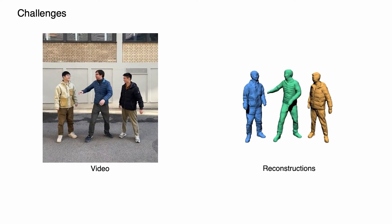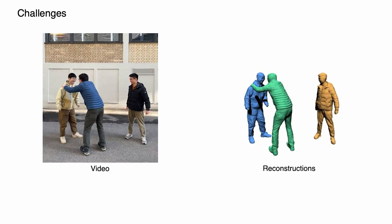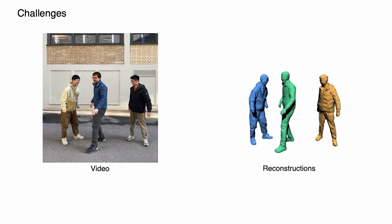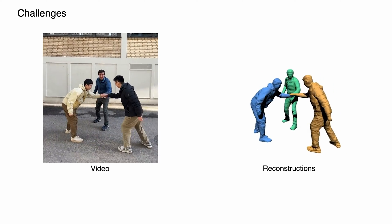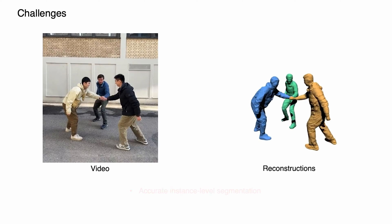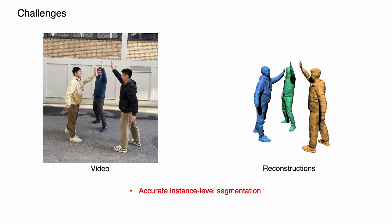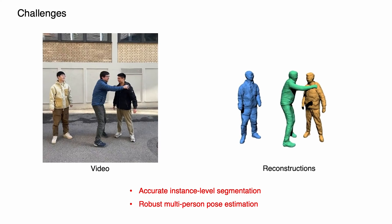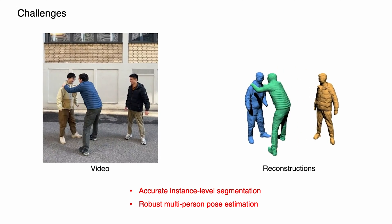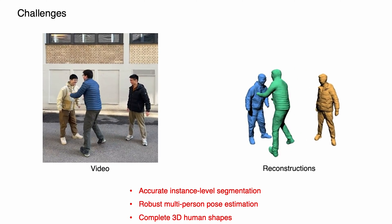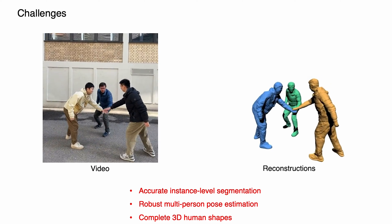Digitalizing multiple moving individuals that move and interact naturally from monocular videos is challenging. To accomplish it, we require accurate pixel-level disentanglement of individuals and good pose estimations. Additionally, we need to recover complete and detailed 3D human shapes from only partial observations.